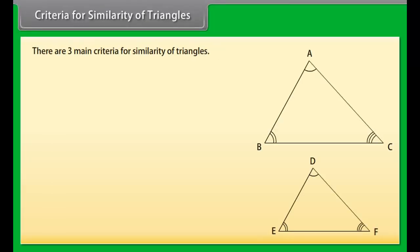Criteria for similarity of triangles. There are three main criteria for similarity of triangles: 1. AAA or AA, 2. SSS, 3. SAS.